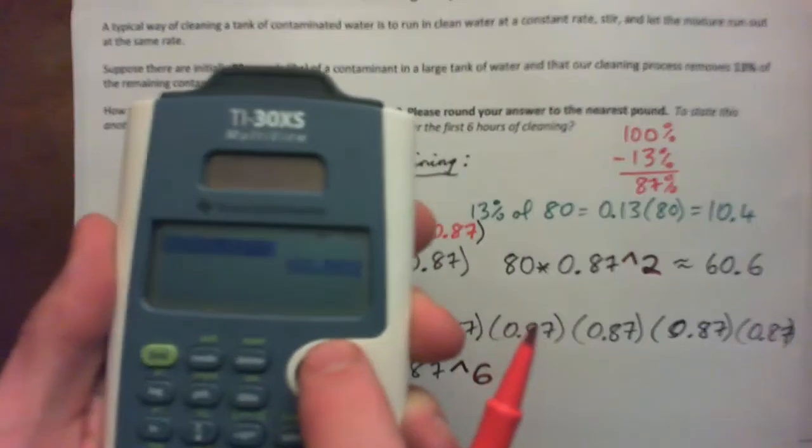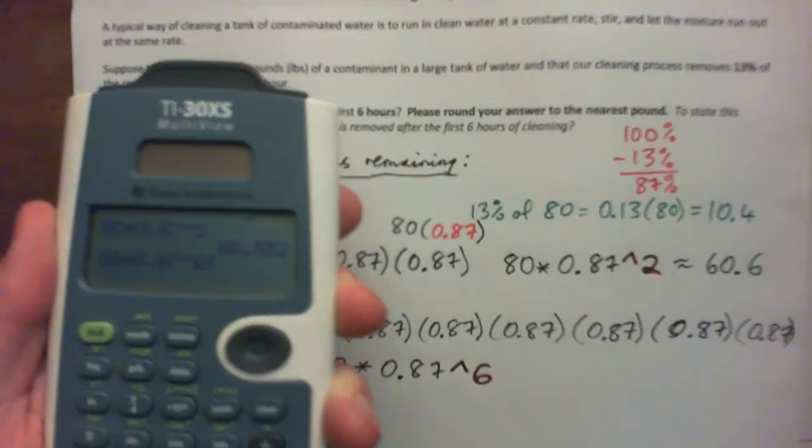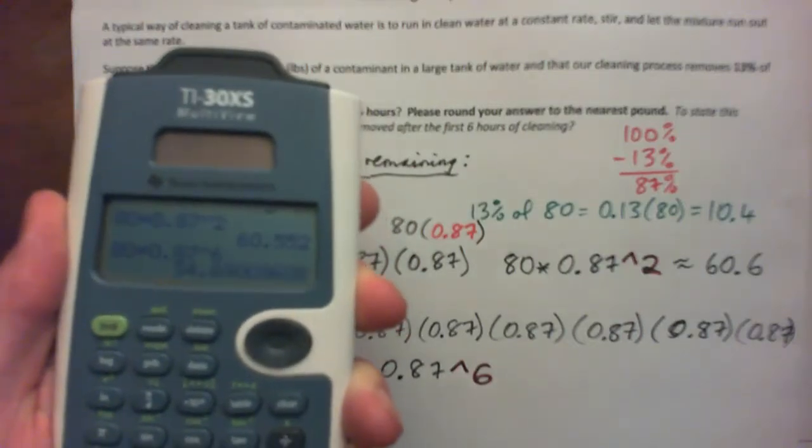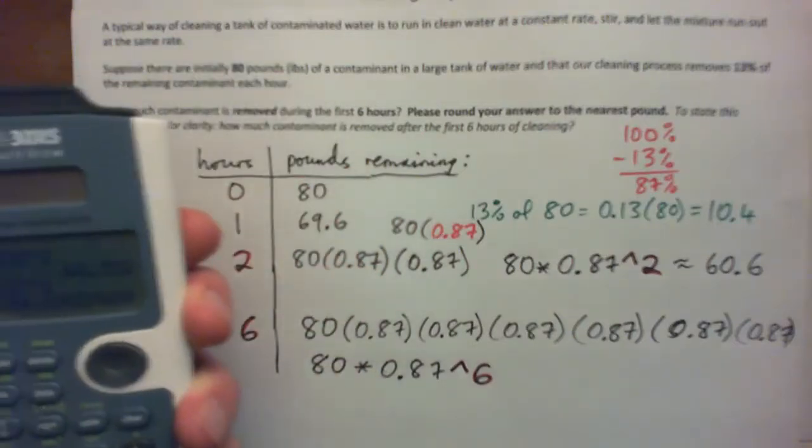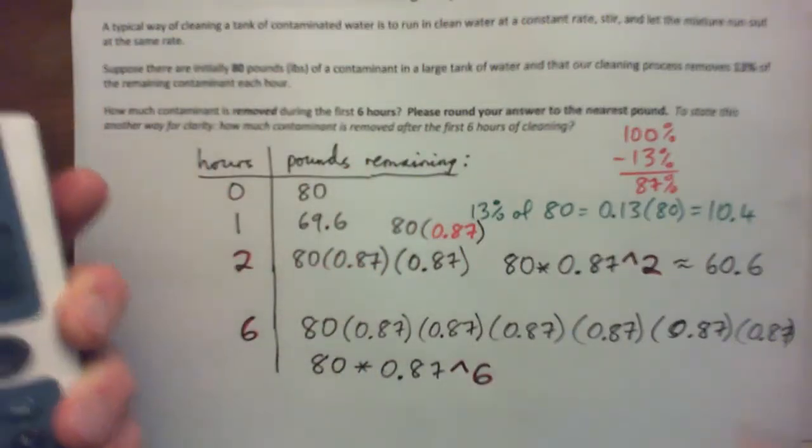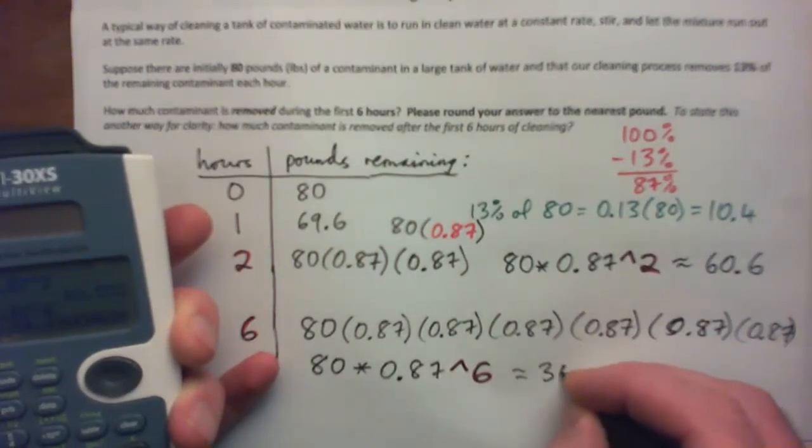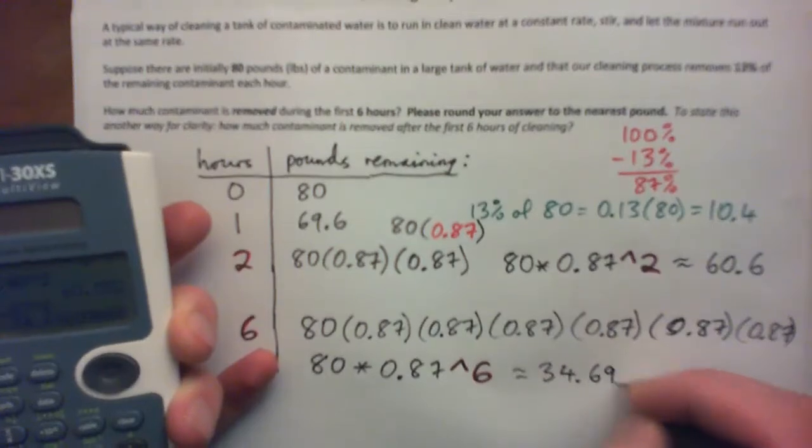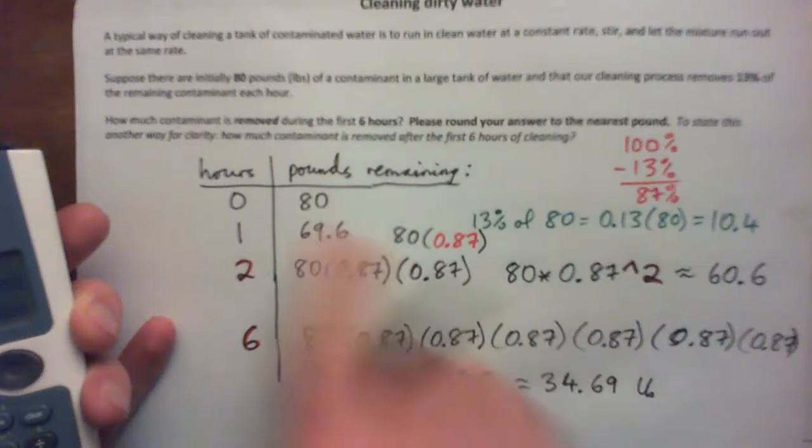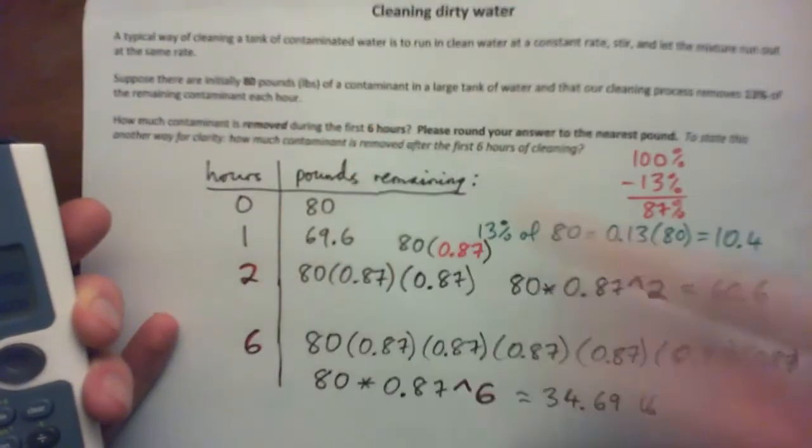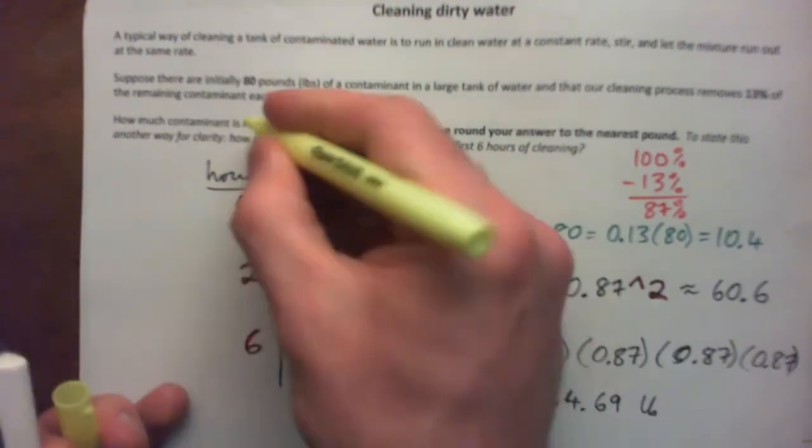I'm just going to use my arrows on the calculator. I'm going to change that to a six. Press enter. And I get 34.69. This is what is remaining. About 34.69 pounds remaining after six hours. But the question is, how much is removed during the first six hours? Removed is a different question.